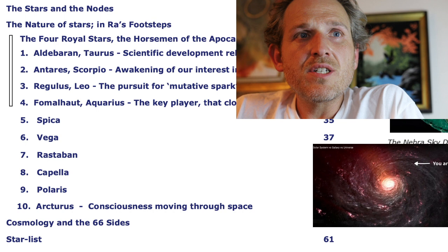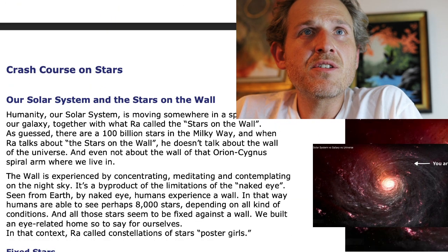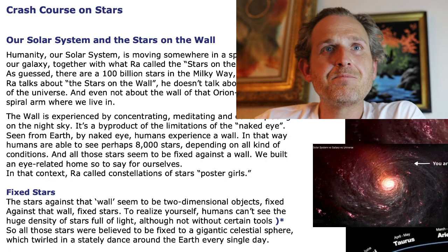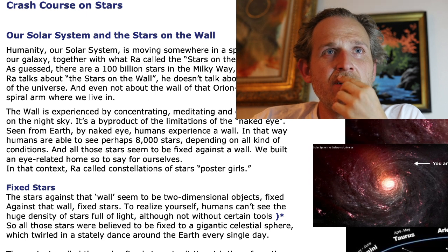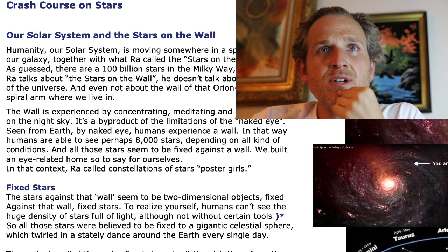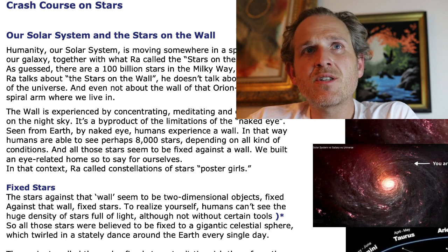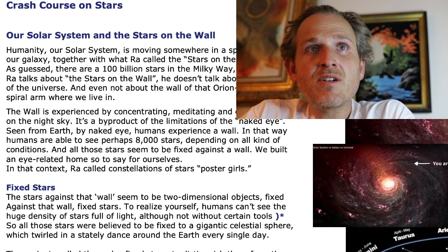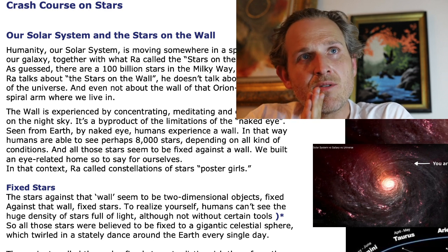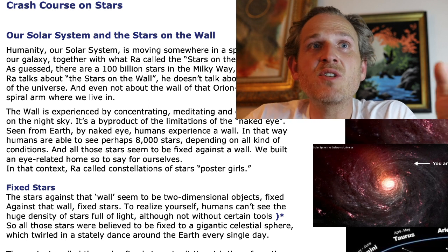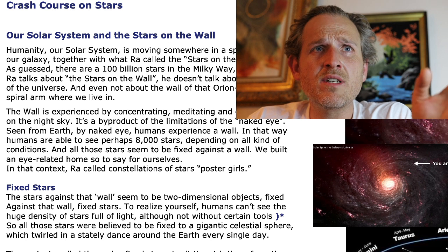We're actually going to start with our solar system and the stars on the wall. Humanity, our solar system, is moving somewhere in a spiral arm of our galaxy, together with what Ra called the stars on the wall. As guessed, there are 100 billion stars in the Milky Way. When Ra talks about the stars on the wall, he doesn't talk about the wall of the universe, and not even about the wall of that Orion-Cygnus spiral arm where we live.